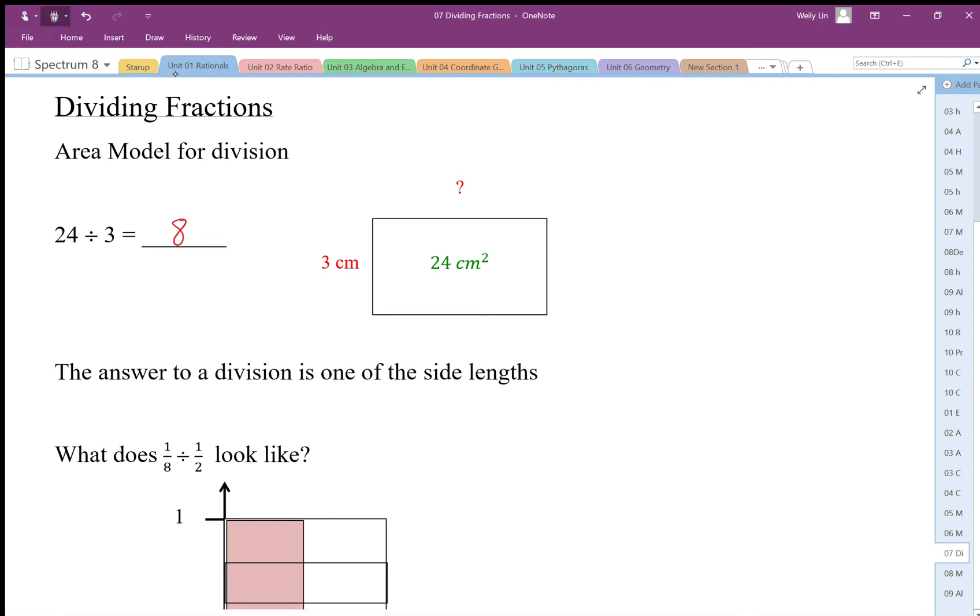To formalize this a little bit more, we can say that for division, area divided by length equals width. And that's a generalization we can make.